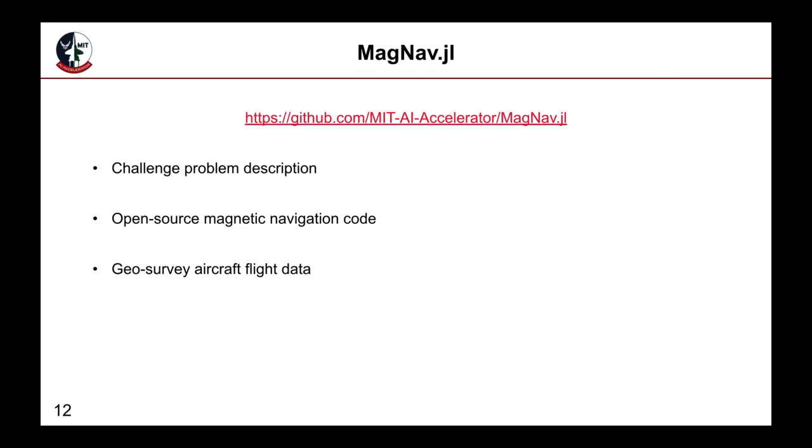The public version of this project is available in the magnav.jl repository at the link shown here. This repo contains a description of our challenge problem, magnetic navigation code, and flight data, each of which will be discussed next.